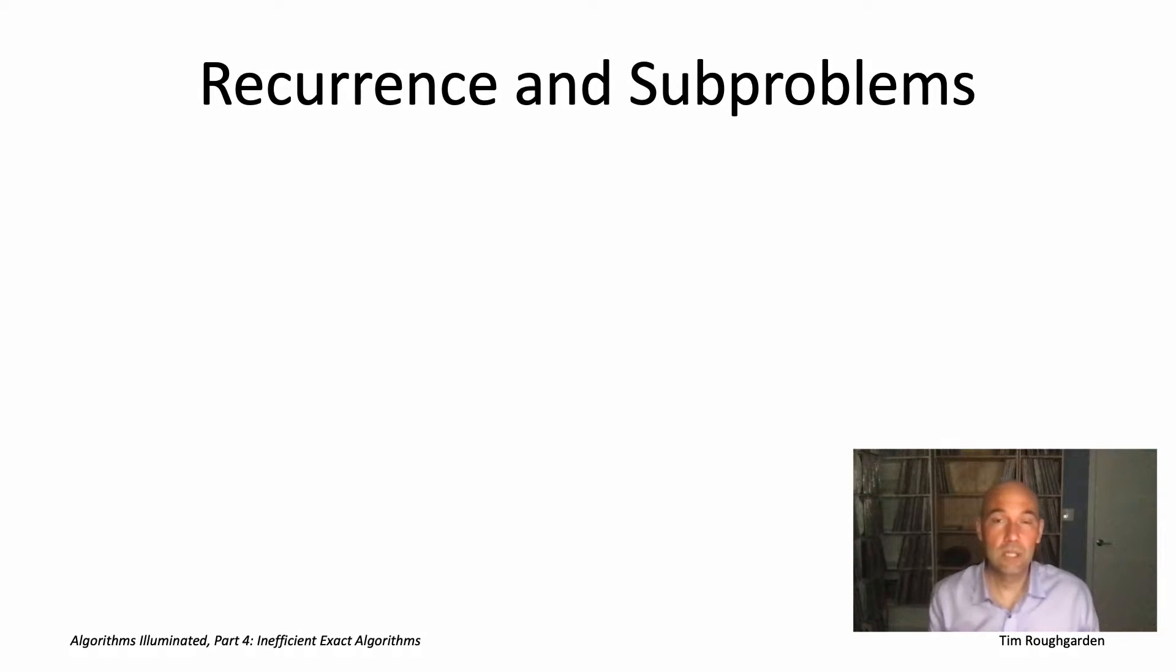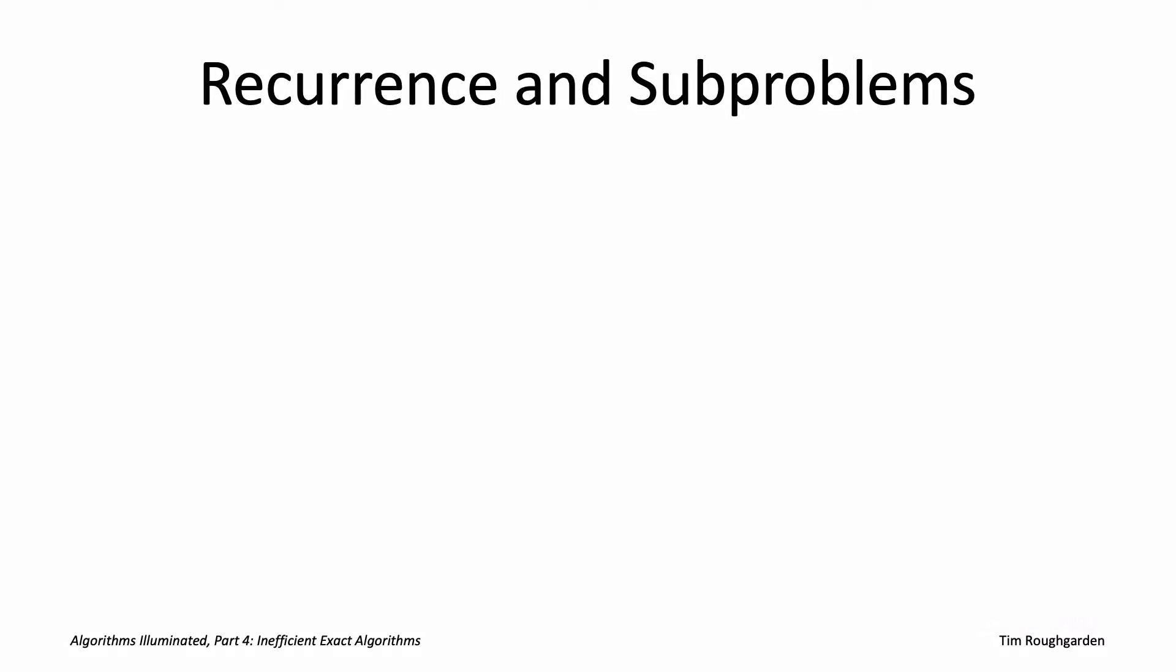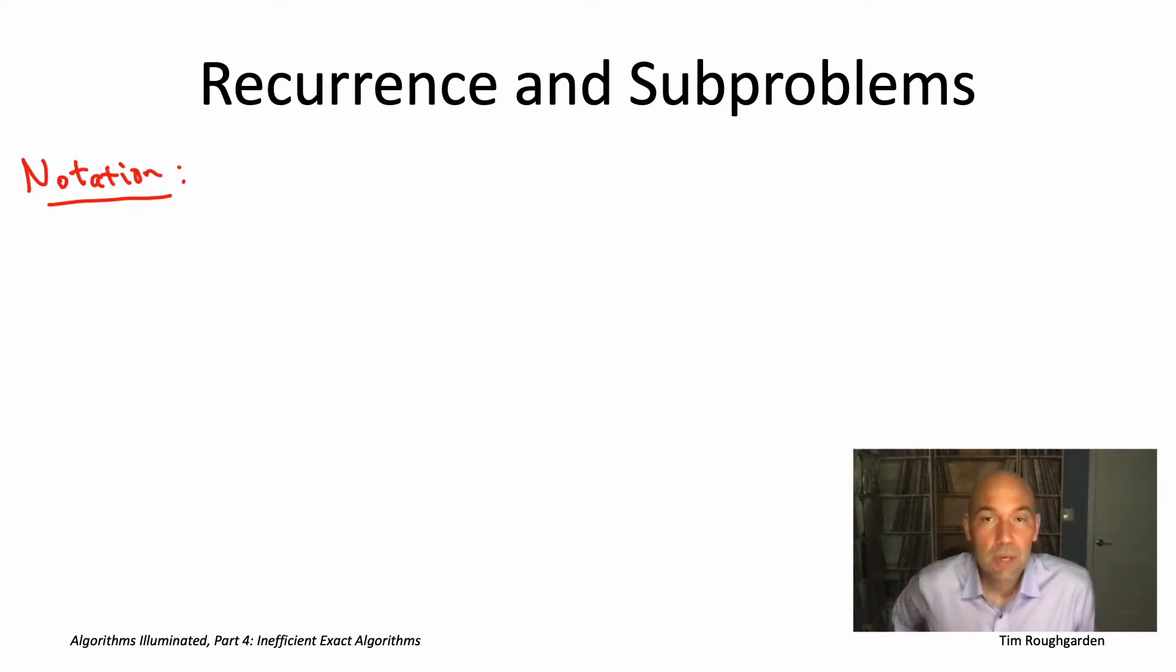So now that we understand that there's only these n minus 2 possibilities for what the 1 to j path looks like, we can write down a recurrence which expresses the cost of that optimal solution in terms of the costs of the n minus 2 smaller optimal solutions. So let me introduce a little notation so we can specify the recurrence succinctly.